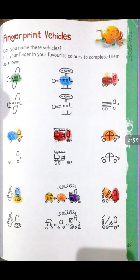Now open your book at page number 49: Fingerprint Vehicles. Look at the pictures of the vehicles carefully and identify them. Students, tell me how the pictures have been made. Now let's repeat the same activity — the same procedure — with your own fingerprint. You can use your favorite color to make your own vehicle, but try to do it beautifully!